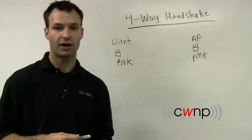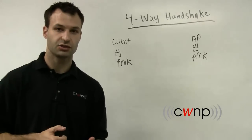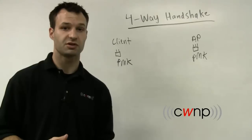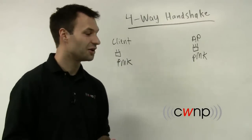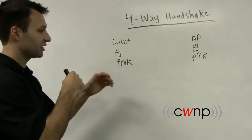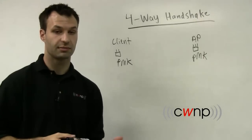With 802.1x EAP, the PMK is actually derived from the EAP exchange. The MSK is derived from the EAP exchange and then the PMK is derived from the MSK. So in either case, depending on the authentication method that you use, both the client and the access point are going to know the PMK.